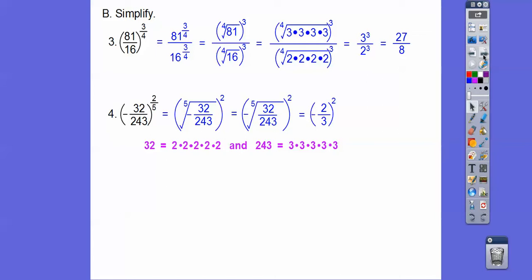So it's negative 2 thirds. Negative 2 thirds squared is negative 2 thirds times negative 2 thirds. Negative times negative is a positive, 4 ninths.